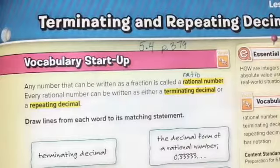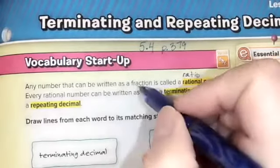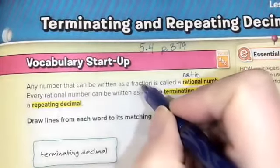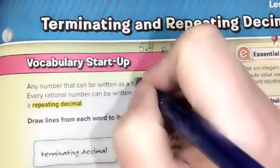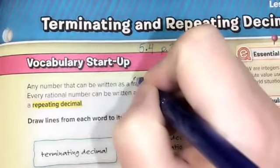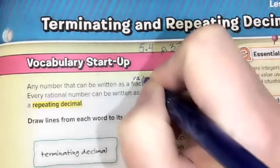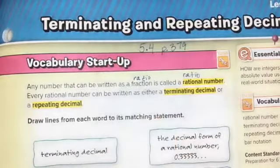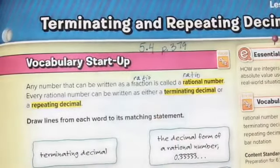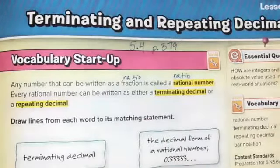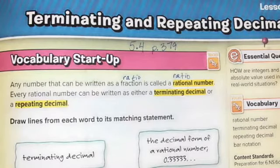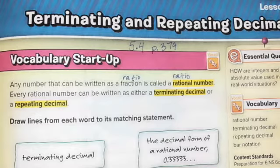One thing worth noting: if you look at the word 'rational,' you can see the word 'ratio' right inside of it — R-A-T-I-O. And when you look at the word 'fraction,' you have the word 'ratio' in there as well with a C thrown in, but the root word is the same. So a fraction and a rational number are ways of expressing ratios of numbers.